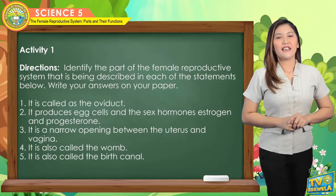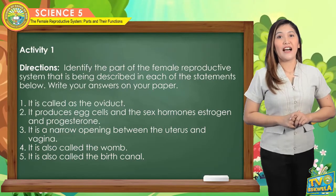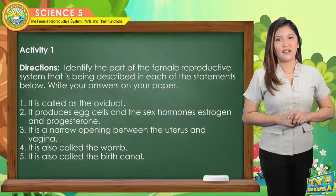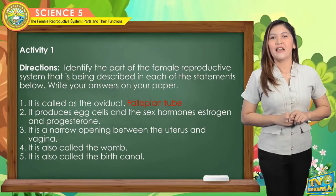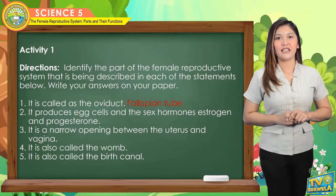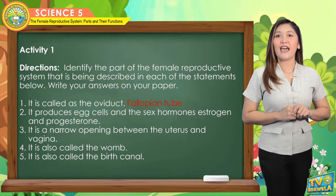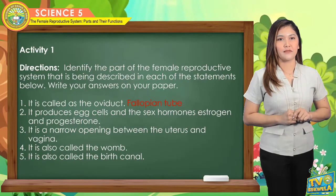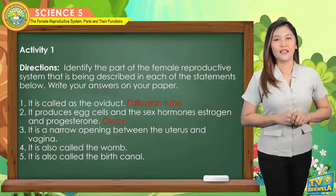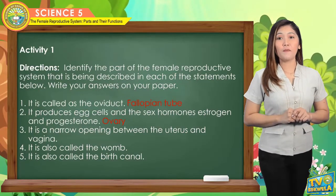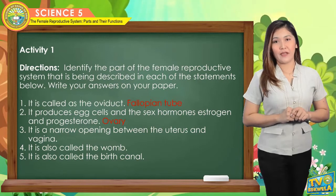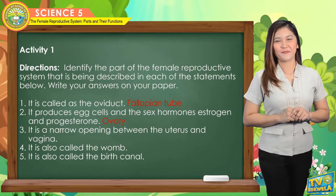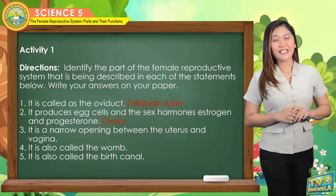For number one, it is called the oviduct. The answer is fallopian tube. For number two, it produces egg cells and the sex hormones estrogen and progesterone. The answer is ovary. For number three, it is a narrow opening between the uterus and the vagina. The answer is cervix.